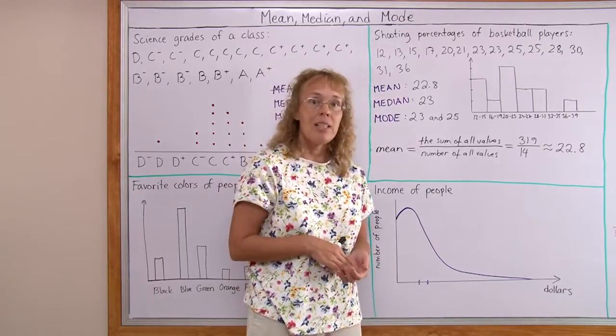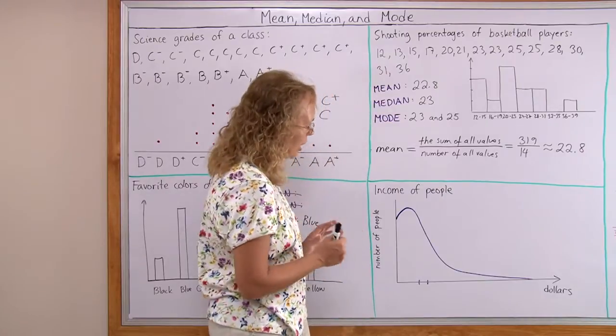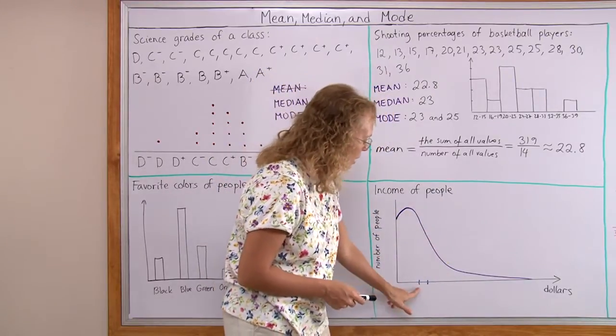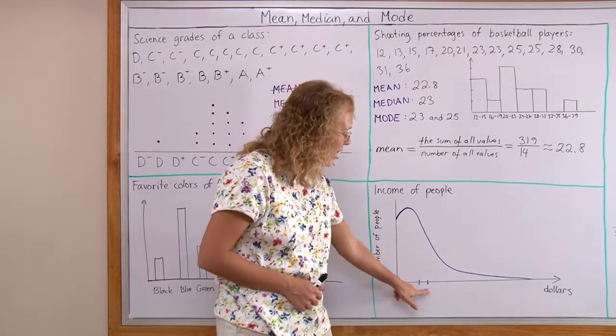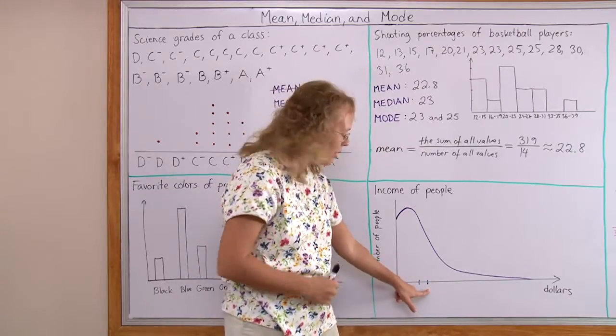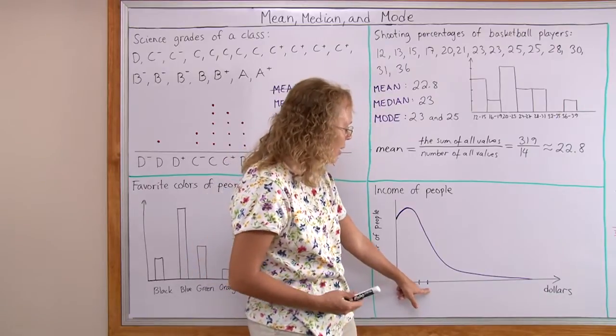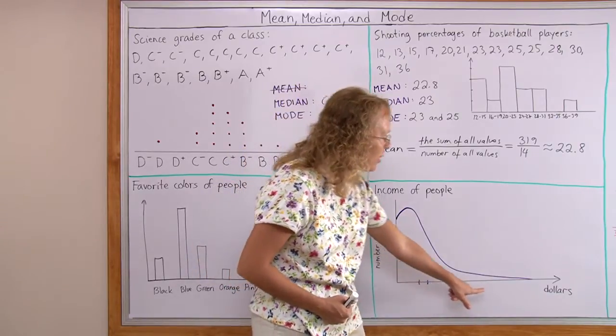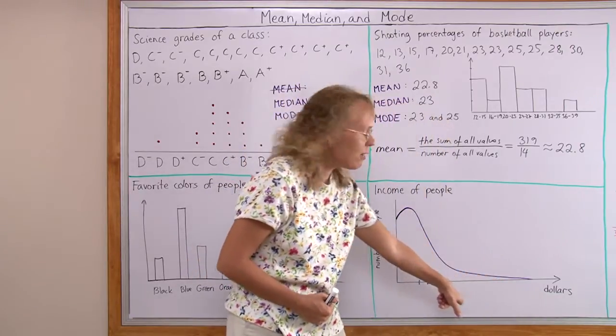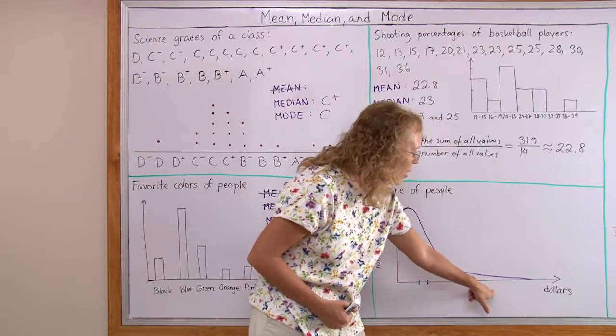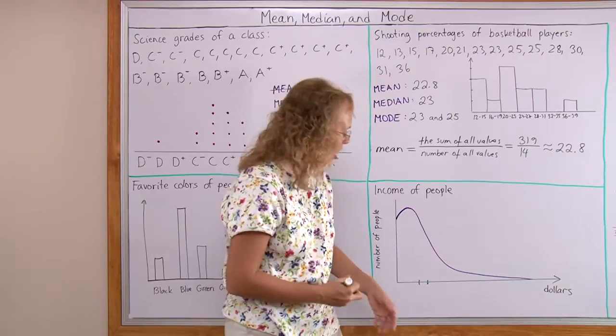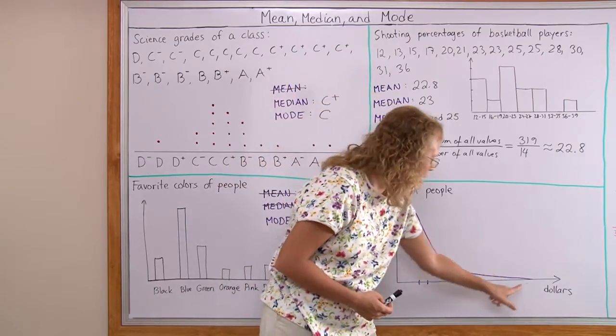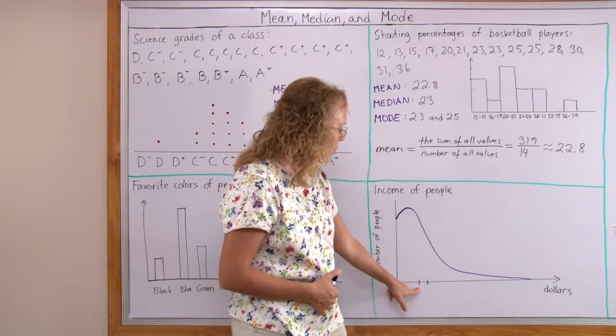But mean and median are possible to calculate. And what happens in this kind of a shape is that the median might be somewhere here. And the mean gets to be more. That is because the mean is affected so much by these big numbers coming from here. Even though they are few, there's only few people earning big dollars, they affect the mean. So the median might be here. The mean always gets to be some more.